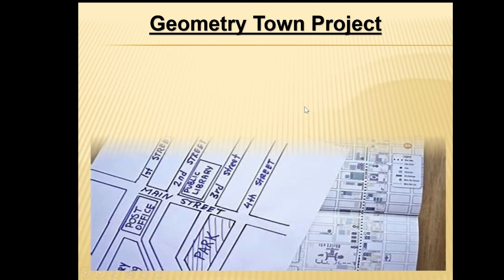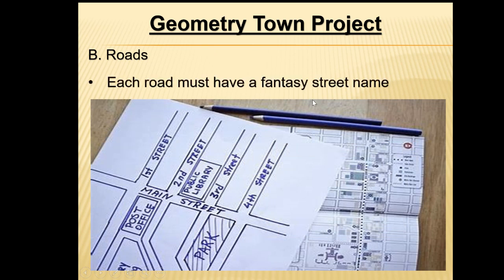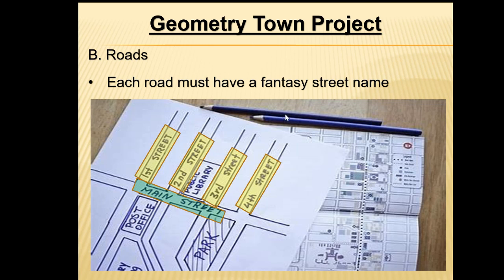Let's move on to letter B, the roads. The first instruction for the roads is that each road must have a fantasy street name. When we say fantasy street name, we don't necessarily mean it has to be something magical — if you want it to be magical you certainly can, but you can also use plain street names. For example: first street, second street, third street, fourth street, and main street. You can come up with whatever name you want — just try to be as creative as you possibly can.